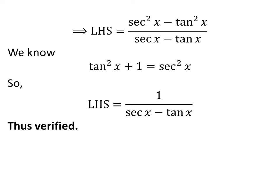So, application of the above identity gives us the left hand side of the identity is equal to 1 upon secant of x minus tangent of x. Thus, left hand side of the identity is equal to right hand side of the identity. Hence, verified the identity.